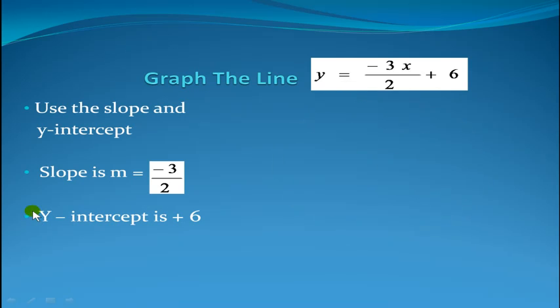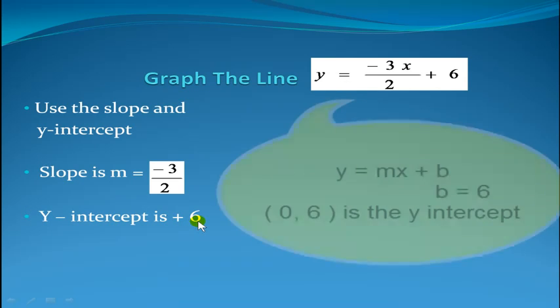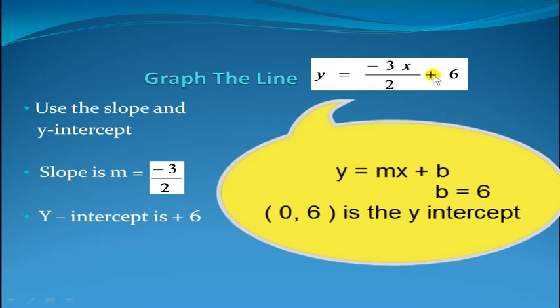We also need to recall that the y-intercept is positive 6. How do you know? You look at the b-value. It is positive 6, so 0, b means 0, positive 6 is our y-intercept.